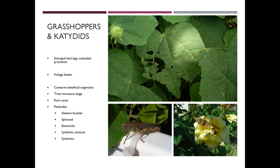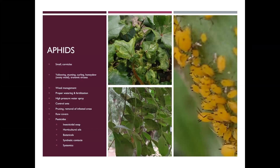The good thing about grasshoppers and katydids is they're usually on hardier plants. They will essentially eat anything, but a lot of times you'll get them on plants where you can use vacuums to suck them off. That's going to work better if you're using it in the immature stage, because if you're trying to suck up adult grasshoppers, you'll be chasing them as they fly away.